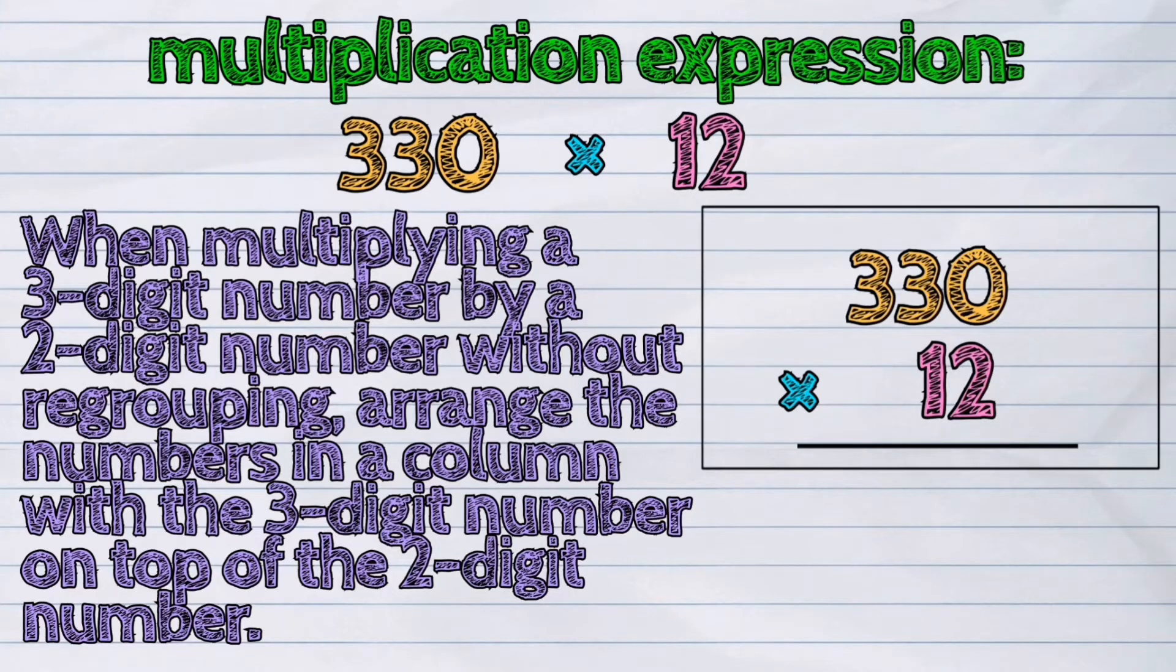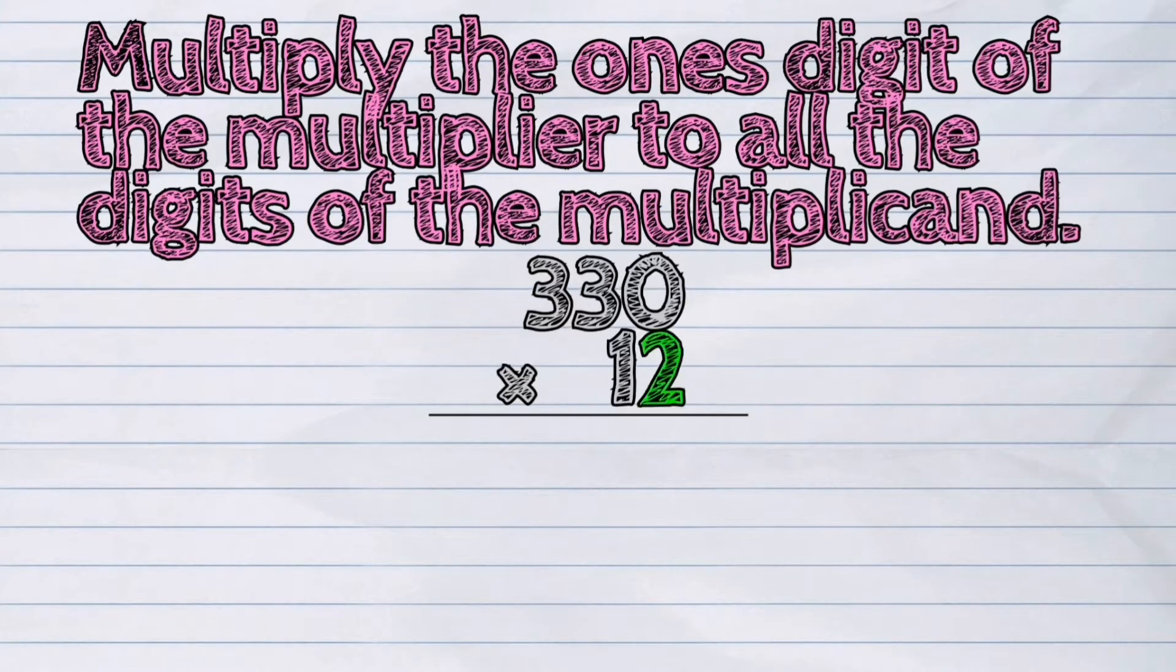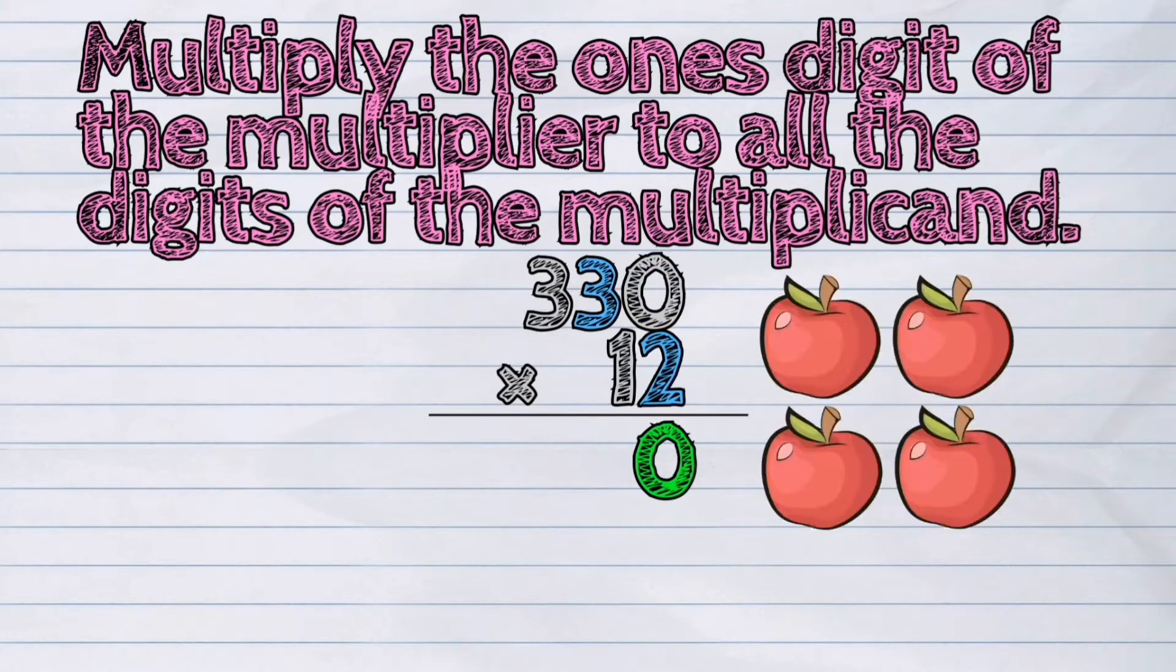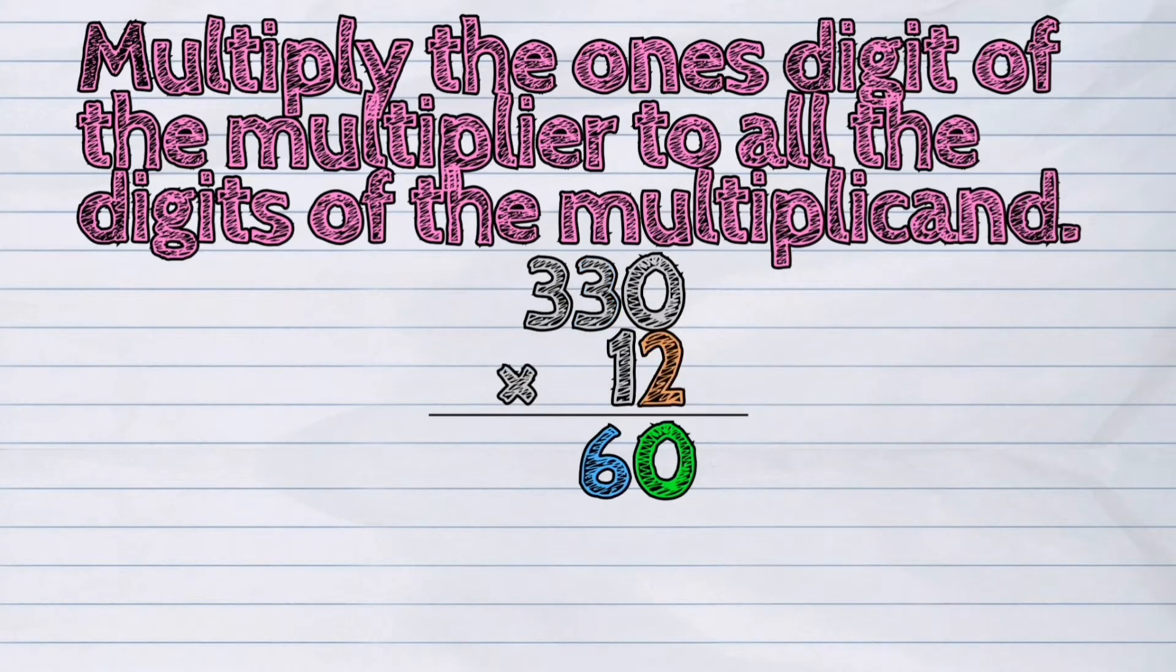Then, multiply the ones digit of the multiplier to all the digits of the multiplicand. Let's start with 2 times 0. The answer is 0. Next is 2 times 3. The answer is 6. And 2 times 3 is also 6.